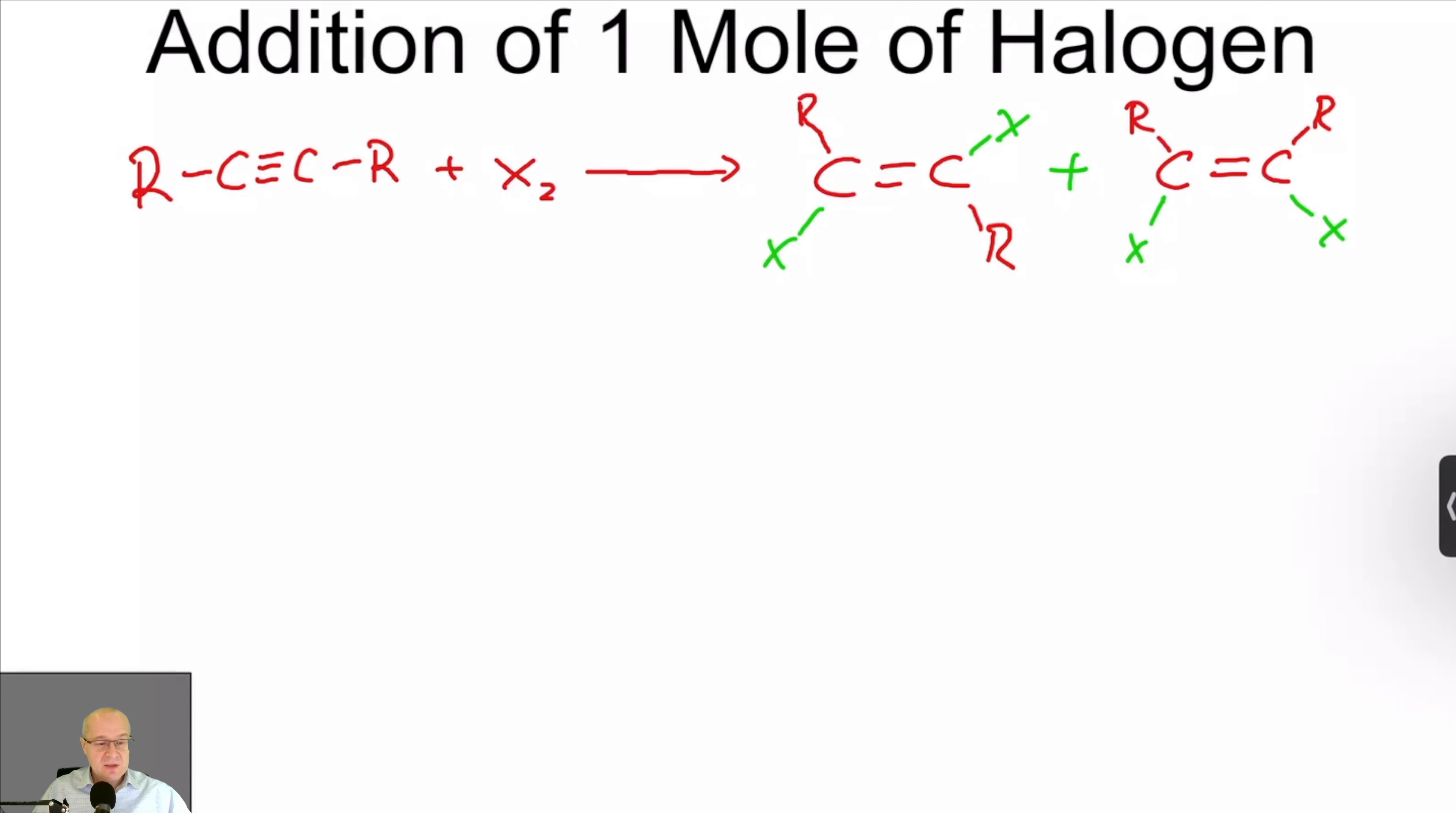So therefore, this reaction is very difficult to control to get it to stop here. You'll actually just, as you're reacting through here, the alkenes now will start picking up molecules of the halide to give you the tetrahalide, which is not what you want.